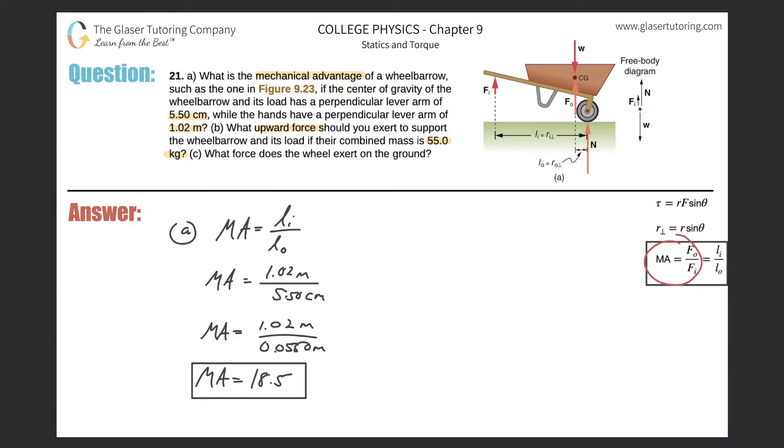So basically what we're going to do again is we're going to use this formula. Let's write that down: mechanical advantage is equal to the output force over the input force. Mechanical advantage we just found. The output force is going to be the force of the wheelbarrow and its load. Therefore, they told us that its mass is 55 kilograms, so I can expand on this if I wanted to call it the mass of the wheelbarrow multiplied by gravity and then divided by the input force, and that's what we're looking for.